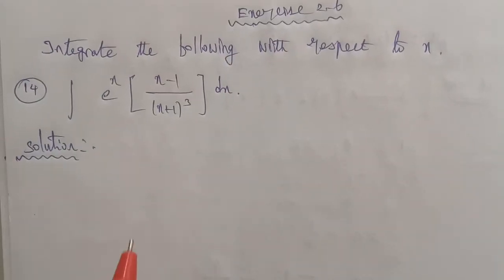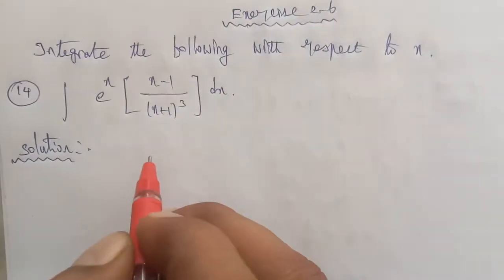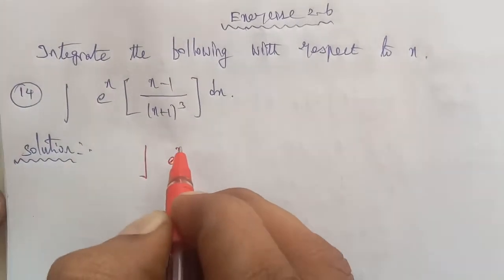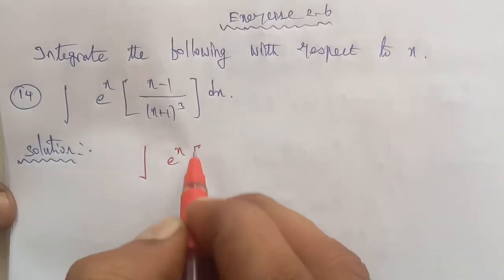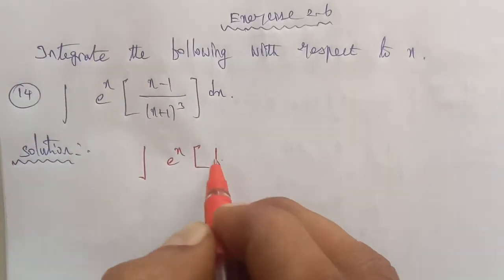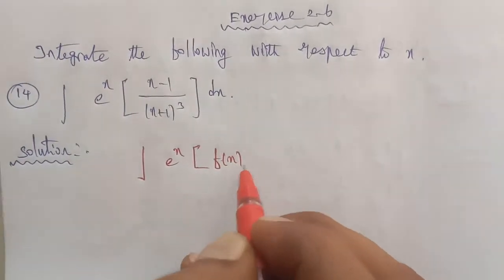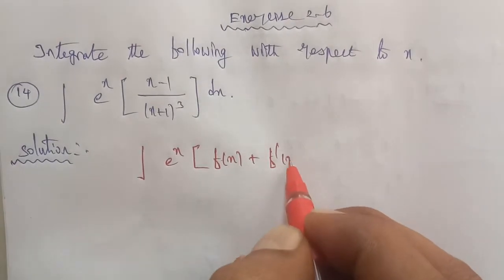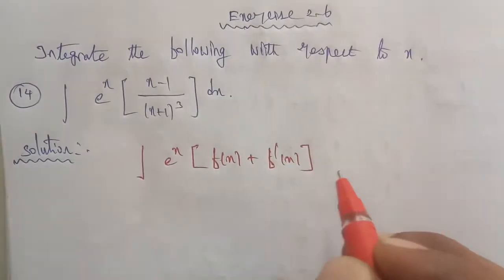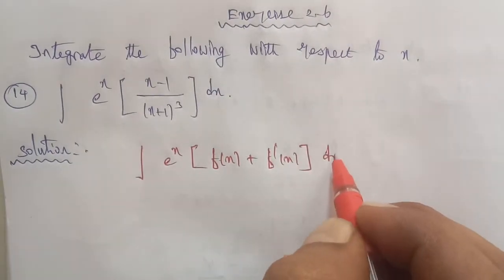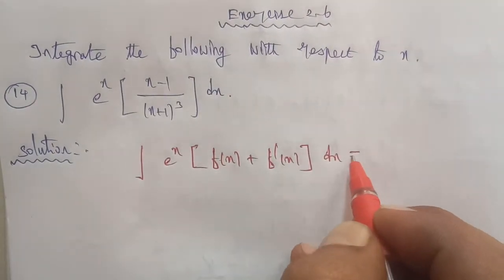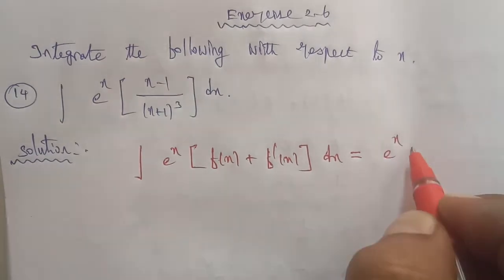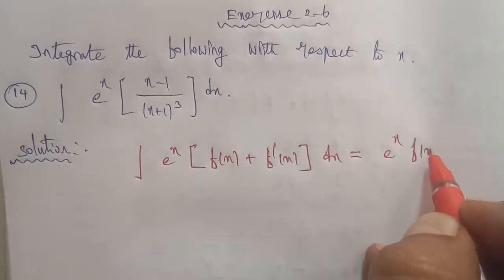So first of all, the formula is: integration of e power of x, f of x plus f dash of x, dx is equal to e power of x, f of x plus C.